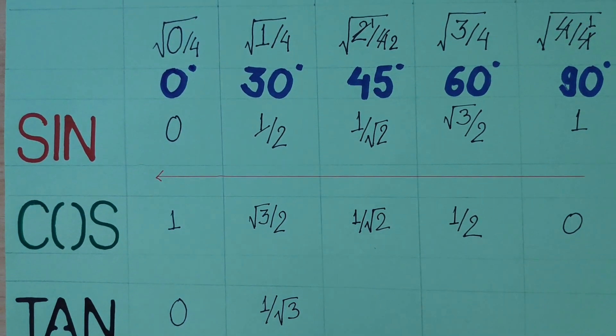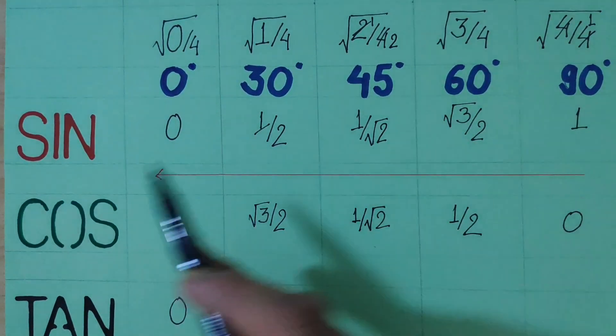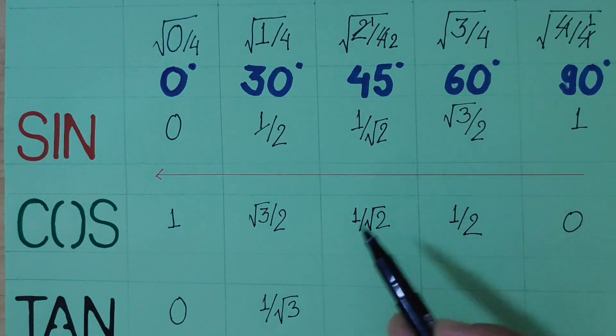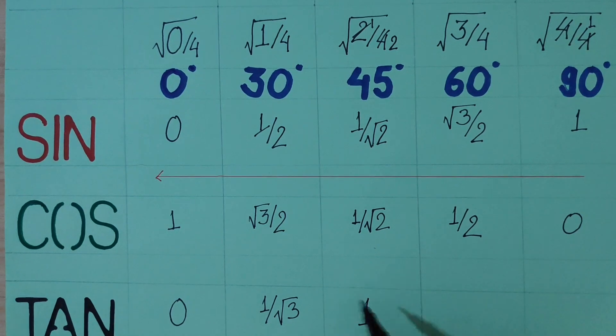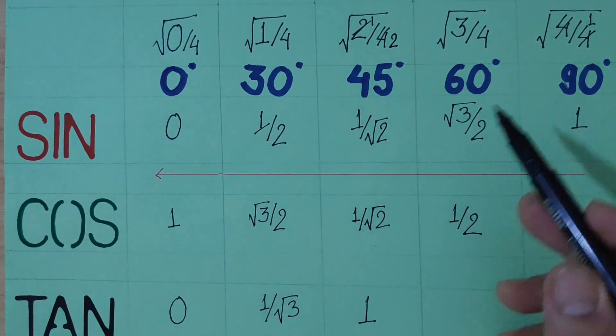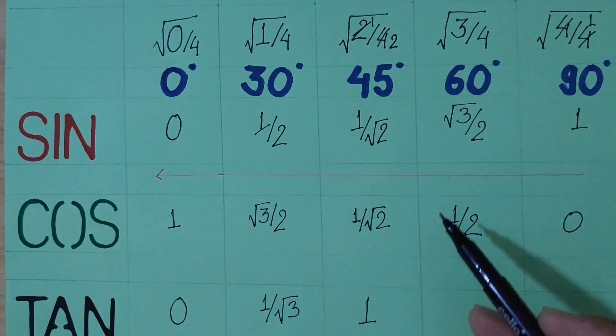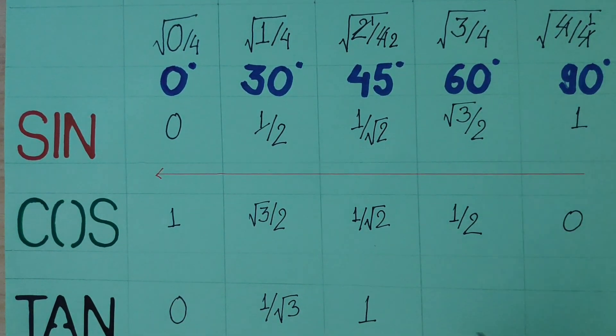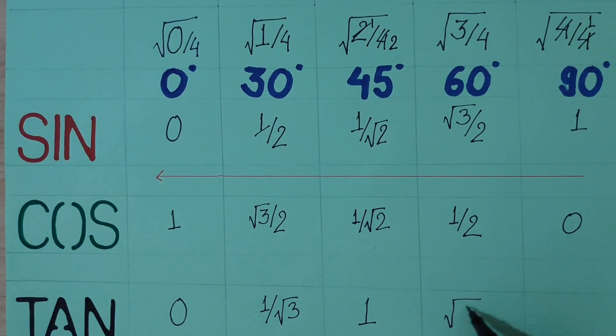Tan 45 is sin 45 over cos 45, which is 1 by root 2 over 1 by root 2, so tan 45 is 1. Tan 60 is sin 60 over cos 60, which is root 3 by 2 over 1 by 2, so tan 60 is root 3.